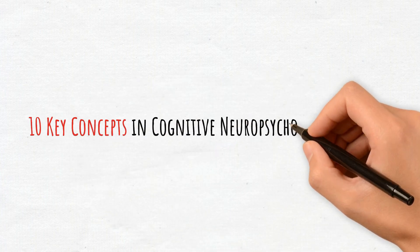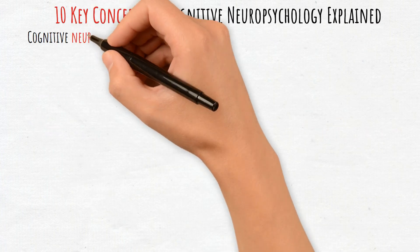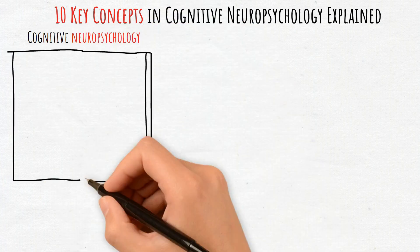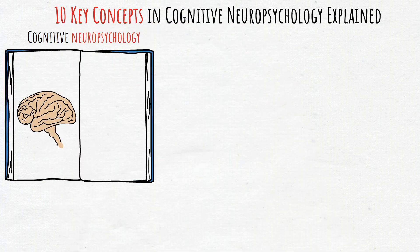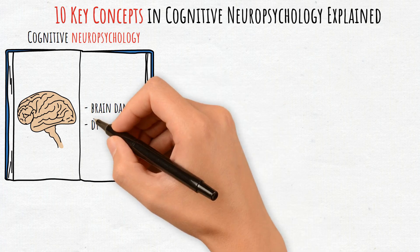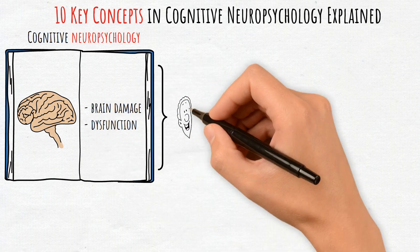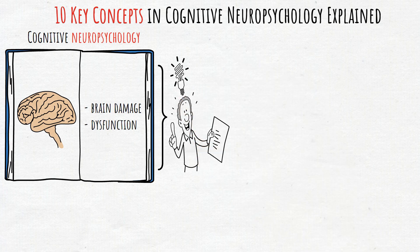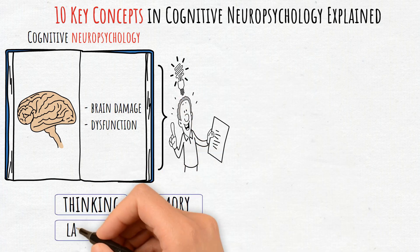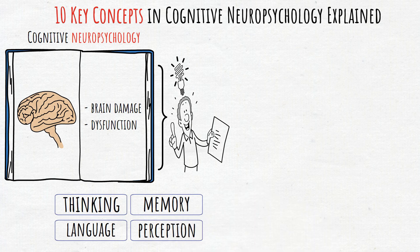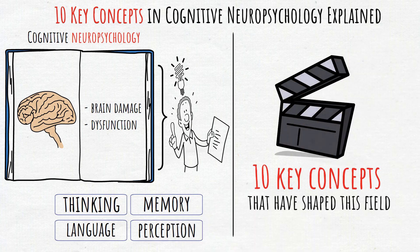10 Key Concepts in Cognitive Neuropsychology Explained. Cognitive neuropsychology studies how brain structures relate to cognitive functions, often through cases of brain damage or dysfunction. By examining these relationships, we can better understand how different areas of the brain contribute to thinking, memory, language, and perception. Here are 10 key concepts that have shaped this field.